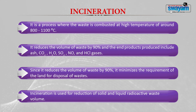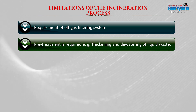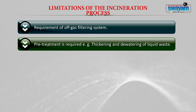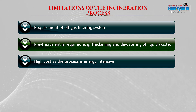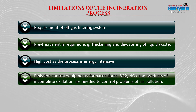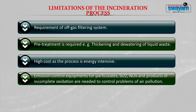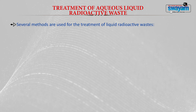Incineration can be used for both solid and liquid radioactive waste, but it has limitations. The process requires an off-gas filtering system. Pre-treatment is required, including thickening and dewatering of liquid waste. The process is energy intensive, operating at 800 to 1100 degrees Celsius, and emission control equipment is required for particulate matter, sulphur dioxide, nitrogen oxides, and other products of incomplete oxidation. Volume of secondary waste generation is also very high.